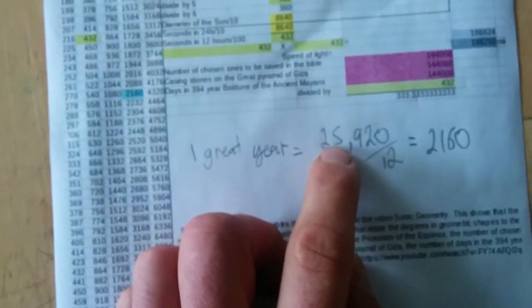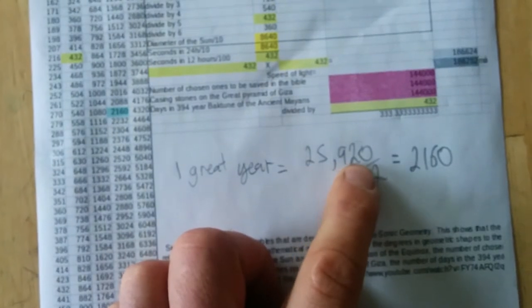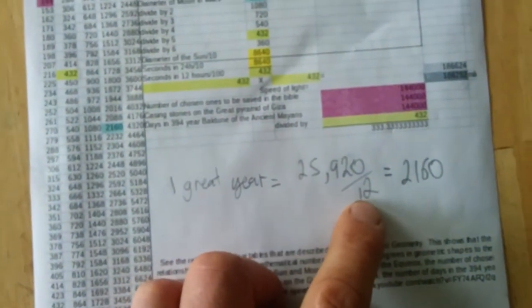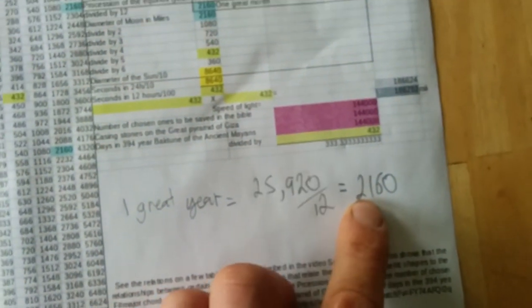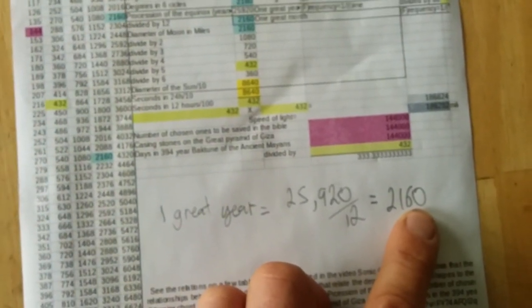I made a spreadsheet to explain it a little bit better. And a great year turns out to be 25,920 days. Divide that by 12. So each age is about 2,160 years.